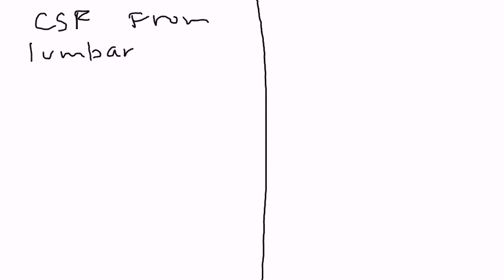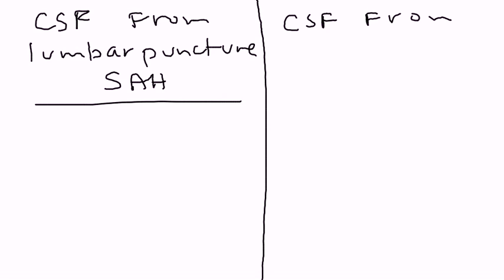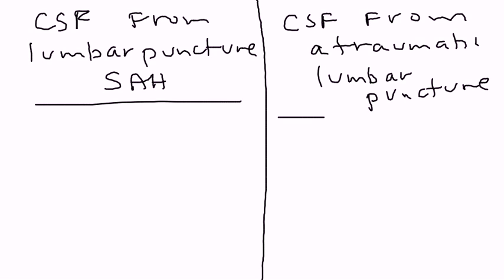And we need to talk about, I'm going to draw a line here. And we're going to talk about CSF from a lumbar puncture. That is from subarachnoid hemorrhage. And CSF from a traumatic lumbar puncture. Now, think about this for a second. A person has subarachnoid hemorrhage. You do the CSF. You do the lumbar puncture and you obtain a sample of CSF.